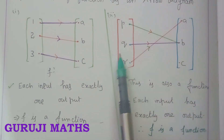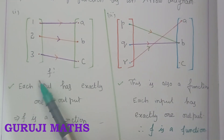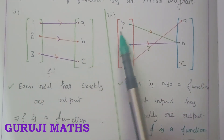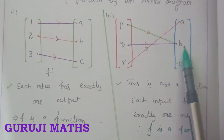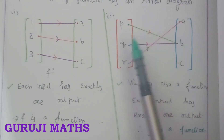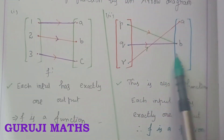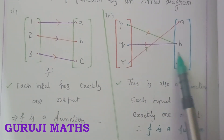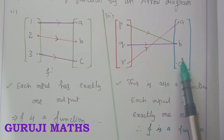Consider the mother analogy: one person cannot have two mothers. If two people claim to be your mother, that is not possible — that is the condition for a non-function.